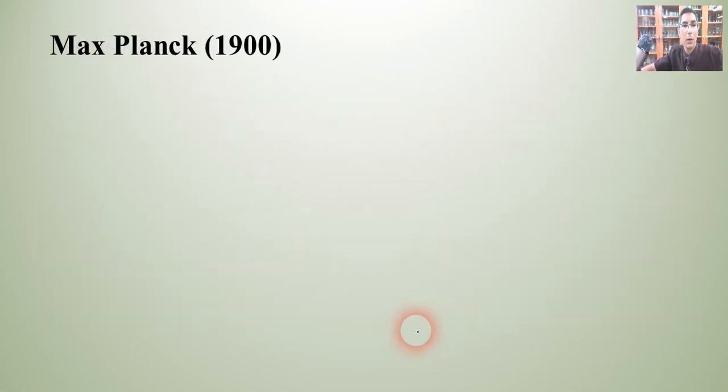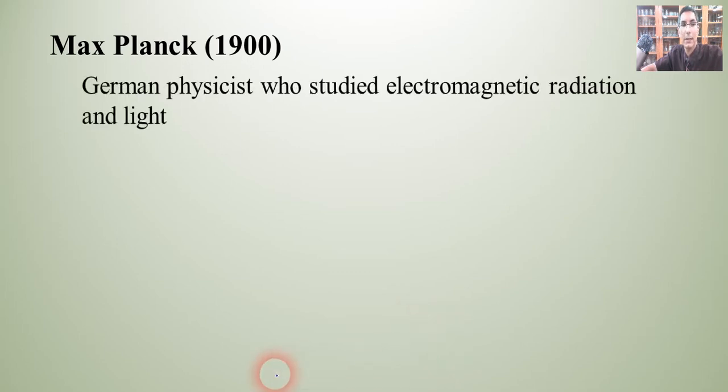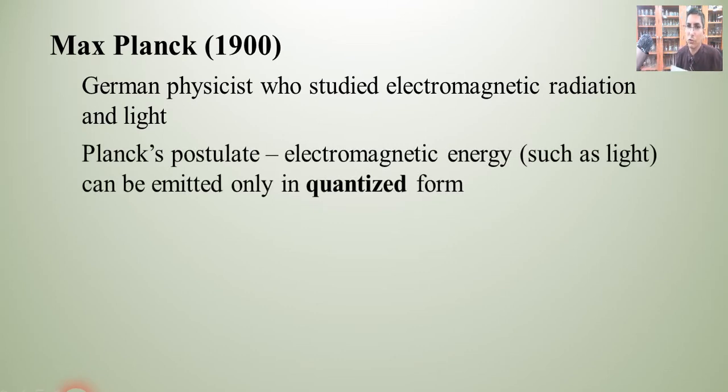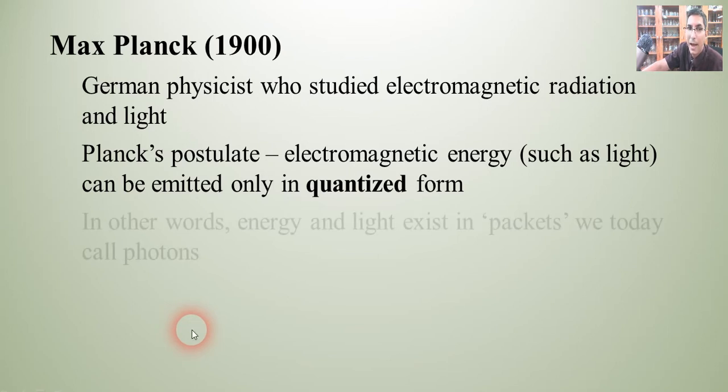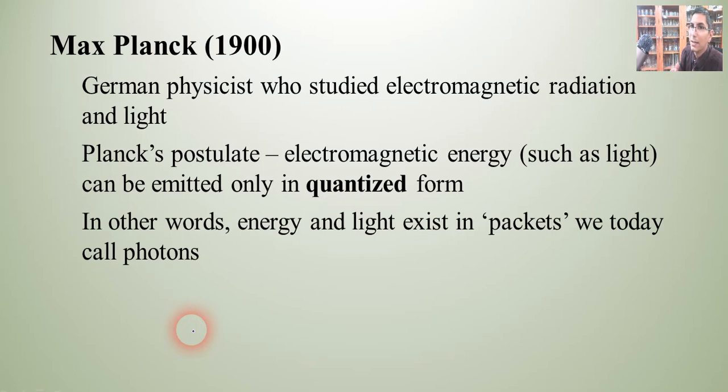Now, when we think about the history of this, we can go back to a scientist by the name of Max Planck. And around the year 1900, he studied electromagnetic radiation and light. He was a German physicist. And he came up with what we today call Planck's postulate. And he stated that electromagnetic energy, such as light or visible light, or invisible light too, can only be emitted in quantized form. Now, you might remember this from lesson three a few videos back. What this basically means is that energy and light exist in these packets, in these quantized form. Now, today, we call those packets photons.